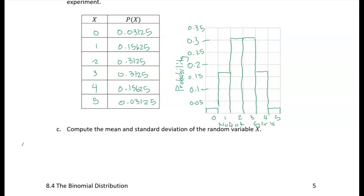And because this is a binomial distribution, we can use those nice little formulas. So the mean is equal to n times p. Which is, we have five trials, and the probability of success is 0.5. So 2.5.